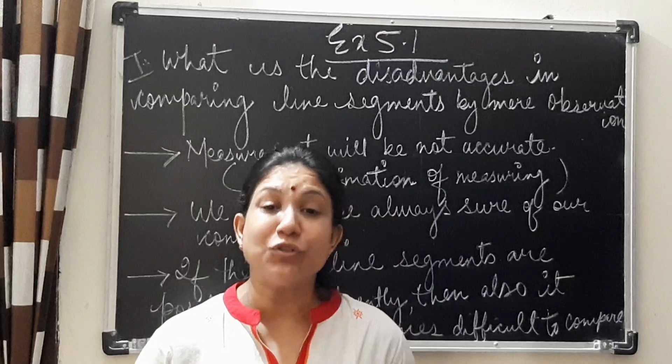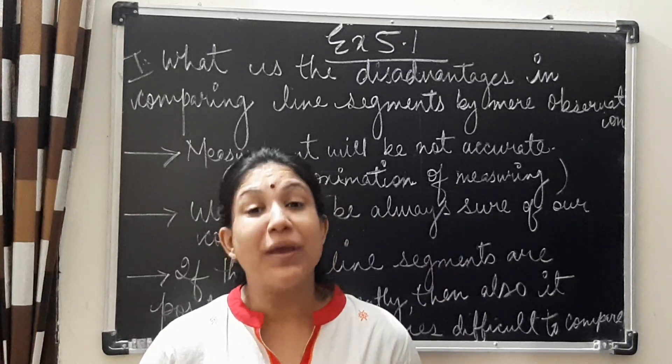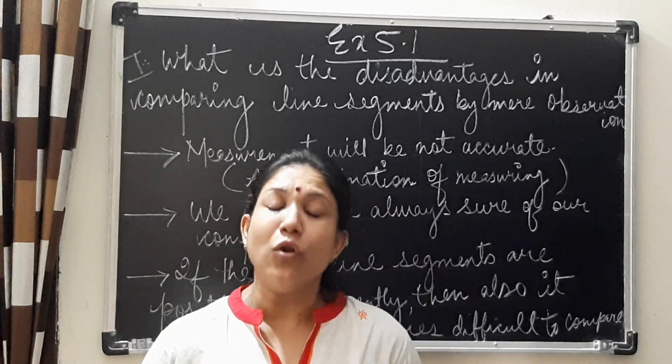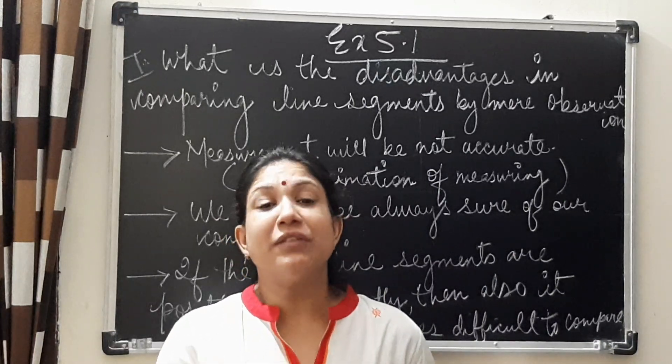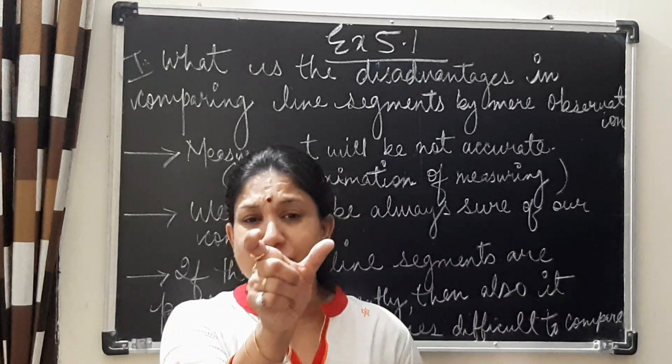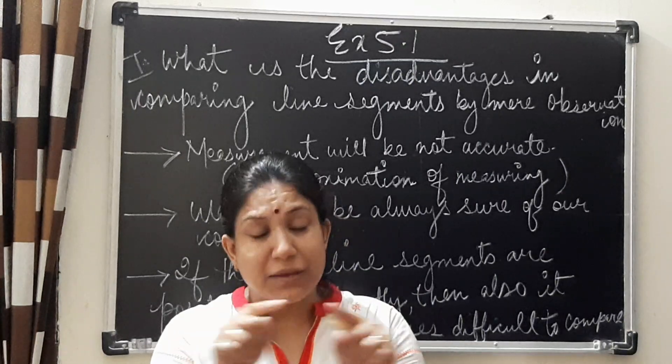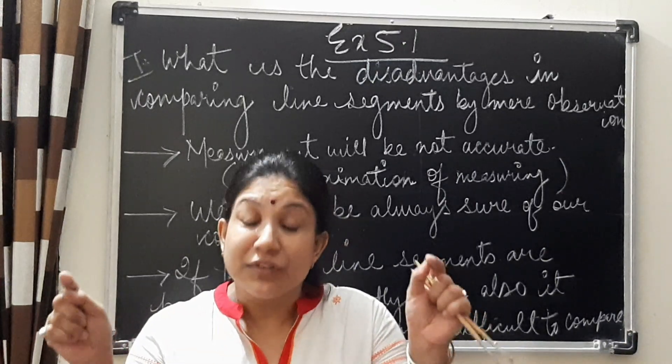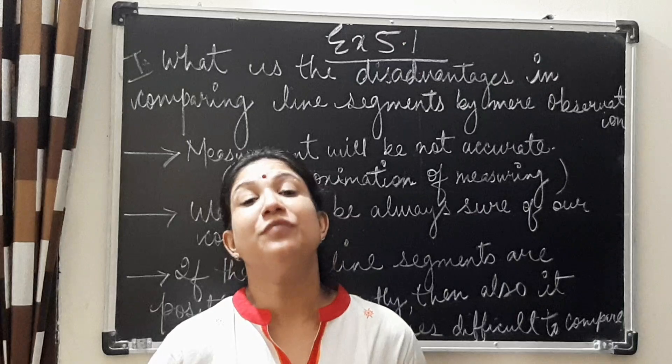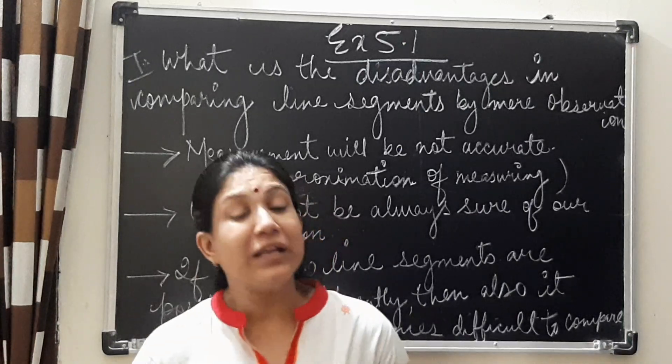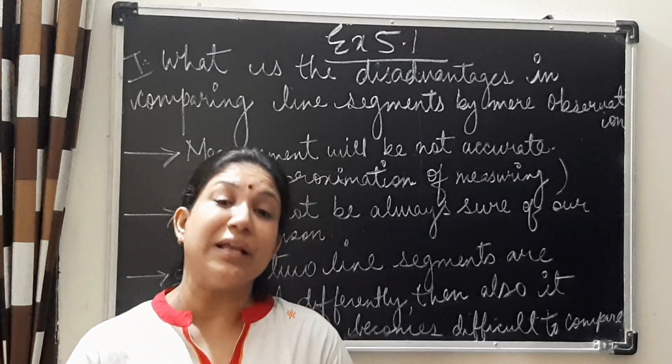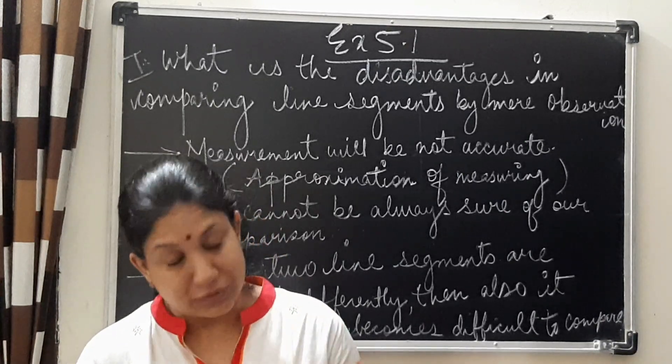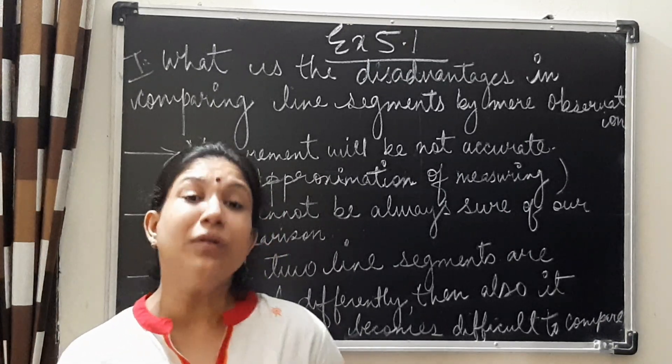This case can be true when the given pair of line segments are altogether of different length. That means, if the first line segment is very small and the second line segment given is of greater length than the first line segment. In that case, it becomes very easy to see and decide which line segment is of more length.